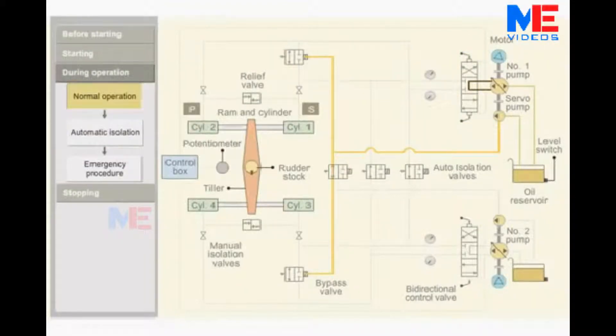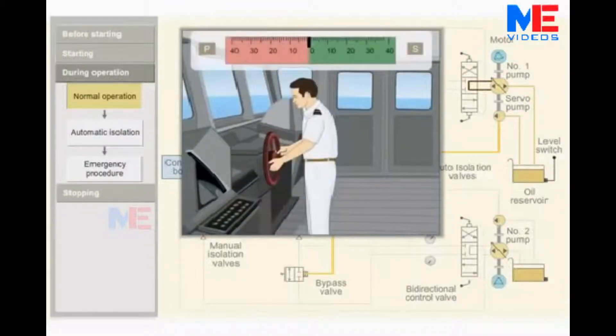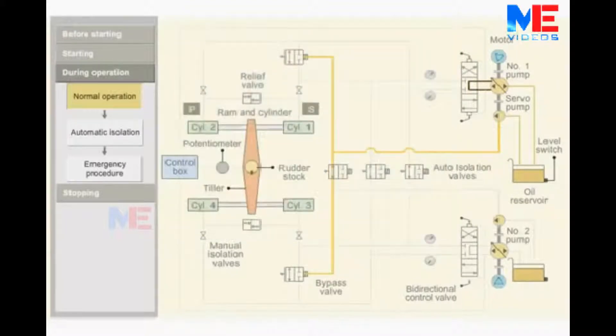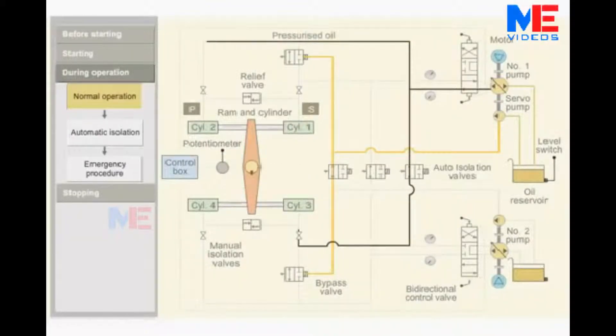When port order is given from the bridge, the control box sends a signal to the bidirectional control valve that moves to the forward side. Pressurized oil is pumped into ram 2 and 3. The pressurized oil moves the ram. The tiller in turn moves the rudder stock from the midship to port position.